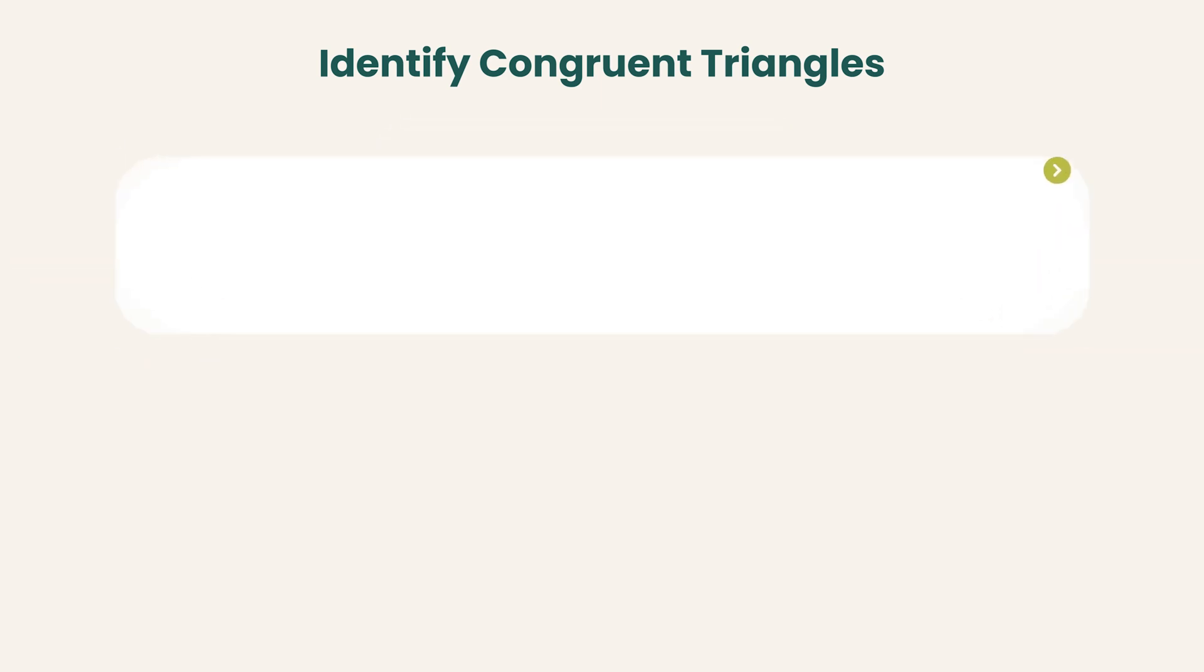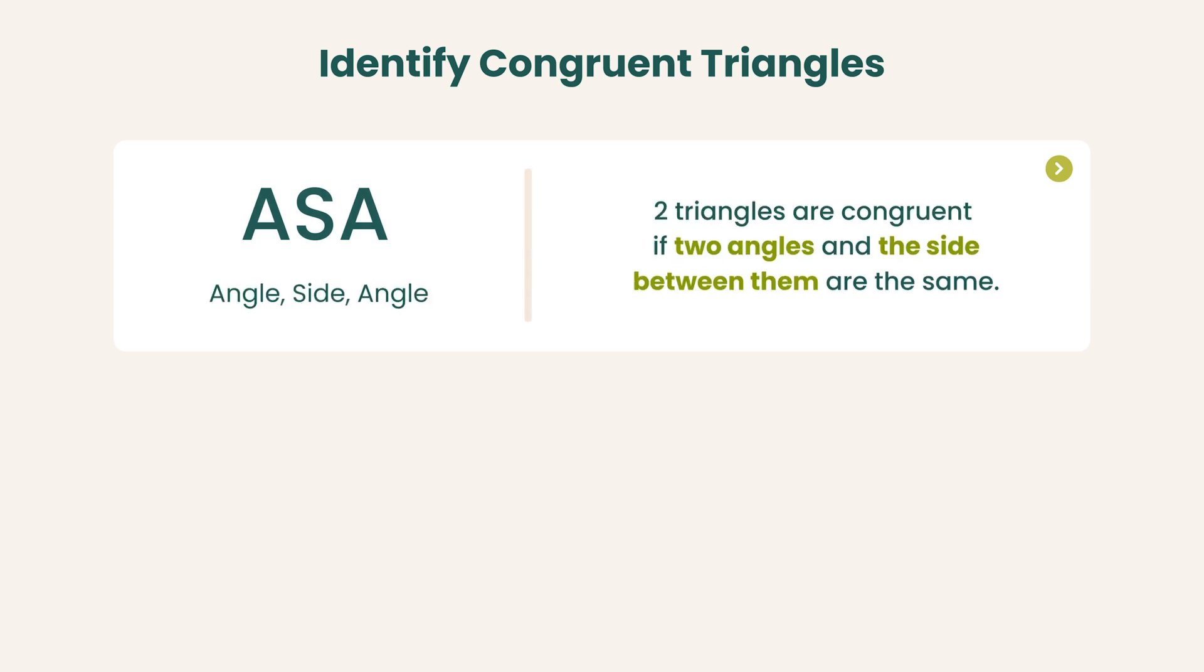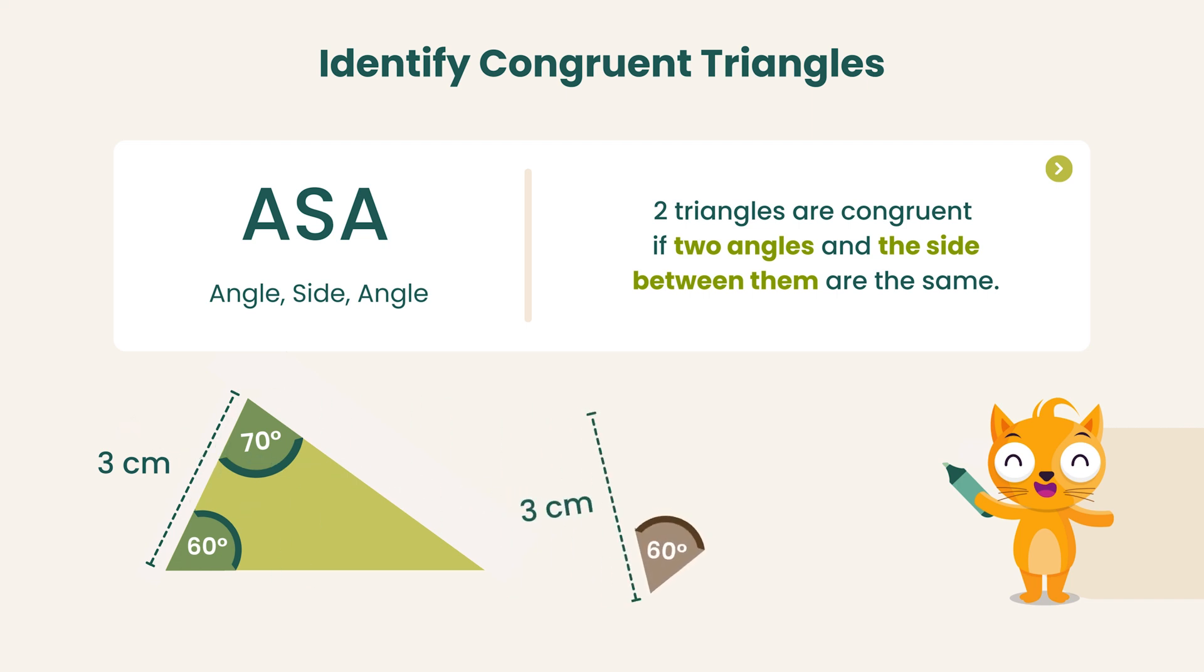Third, ASA, angle-side-angle. Two triangles are congruent if two angles and the side between them are the same. As before, there is only one way to construct a triangle with this information.